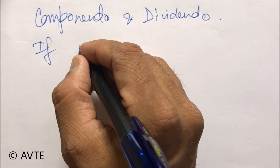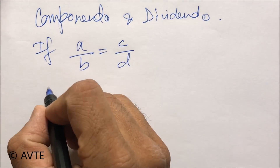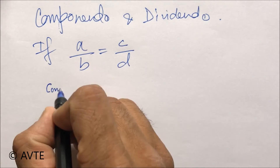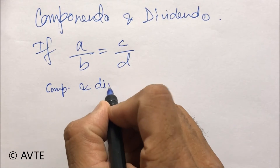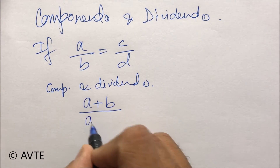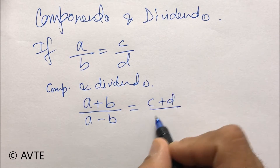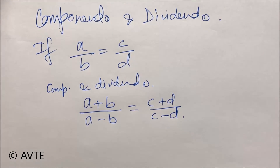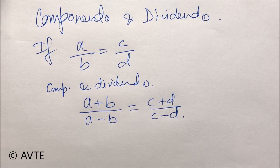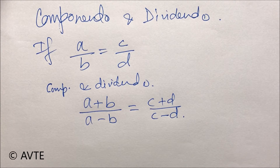If we have A upon B is equal to C upon D and if we apply Componendo and Dividendo, then it is A plus B upon A minus B on one side and C plus D upon C minus D on the other side. Remember, you cannot apply Componendo and Dividendo on one side — there has to be an equation, and then only you can apply Componendo and Dividendo.